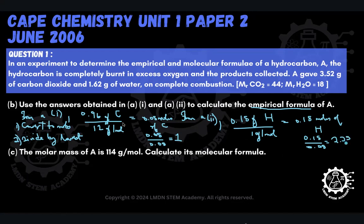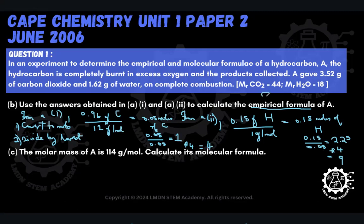We're seeking the simplest whole number ratio of carbon to hydrogen. We have 1 for carbon, which is a whole number, but 2.25 is a decimal. To make 2.25 a whole number, we multiply by 4, giving 9. We must do the same to carbon, multiplying 1 by 4 to give 4. So we have 4 carbons and 9 hydrogens, and the empirical formula is C₄H₉.